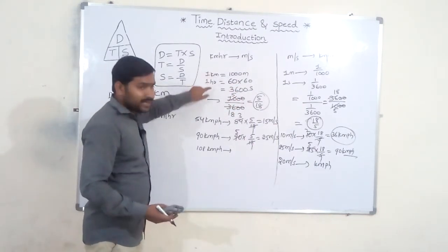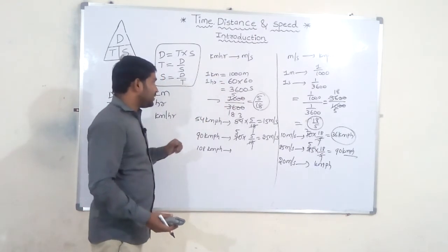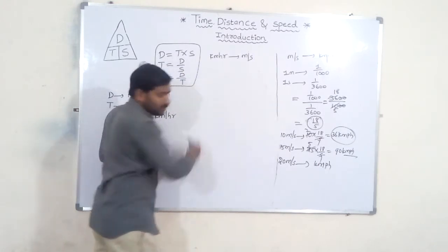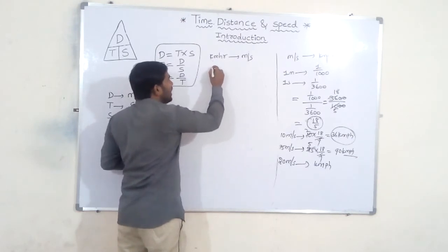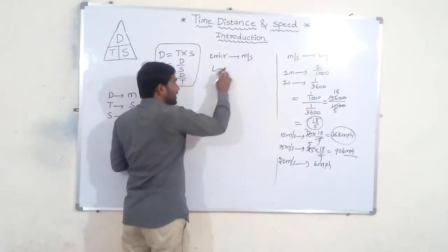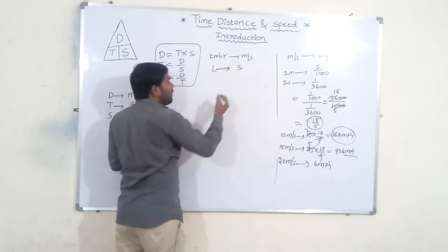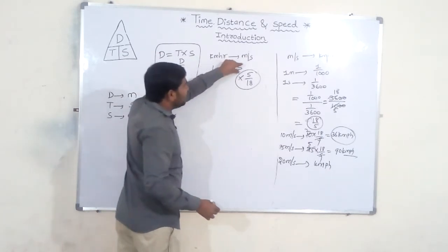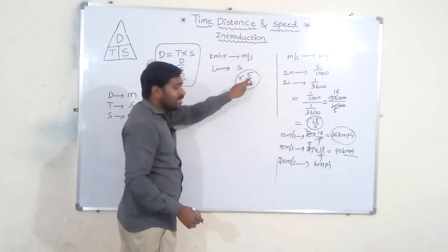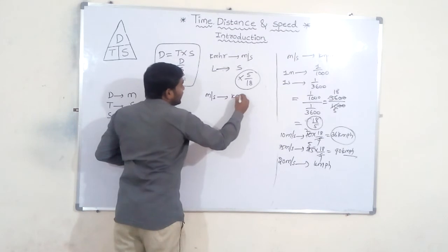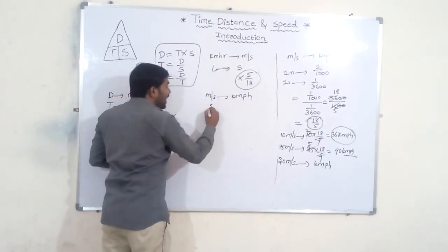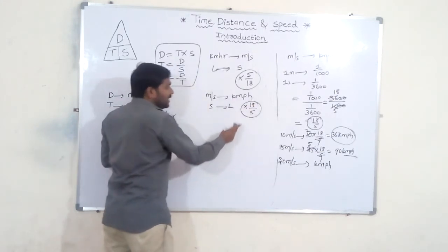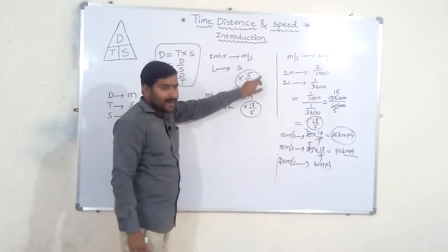So the two conversion values are 5 by 18 and 18 by 5. To avoid confusion: kilometer per hour is large units, meter per second is small units. When converting large to small units, multiply by 5 by 18. When converting small to large units, multiply by 18 by 5.